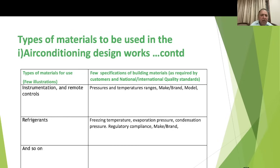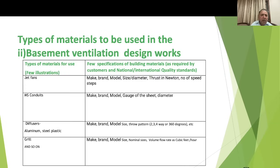Continuing with air conditioning materials: instruments and remote controls — specify pressure and temperature ranges, make, and brand. For refrigerants, specify the freezing temperature, evaporation pressure, condensation pressure, regulatory compliances in the context of the green building concept, and the make and brand.